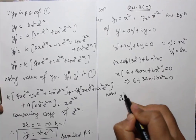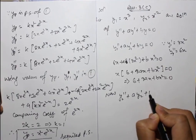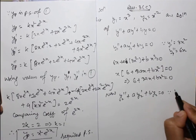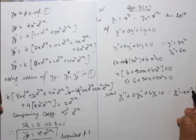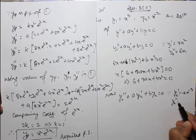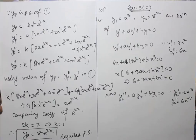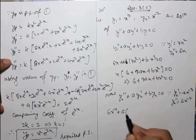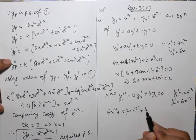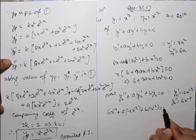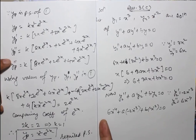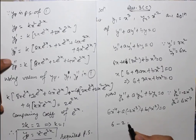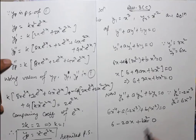Now y2 also satisfies this equation. Since y2 = x^(-2), we have y2' = -2x^(-3) and y2'' = 6x^(-4). Substituting: 6x^(-4) + a·(-2x^(-3)) + b·x^(-2) = 0. Multiplying through by x⁴ on both sides gives: 6 - 2a + b = 0.